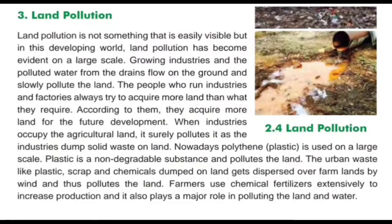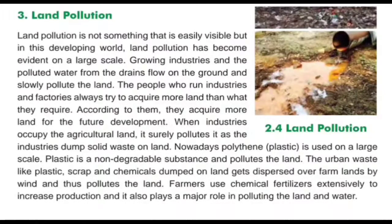When industries occupy agricultural land, it surely pollutes it as industries dump solid waste on land. Polythene, i.e. plastics, is used on a large scale. Plastic is a non-biodegradable substance and pollutes the land. Urban waste like plastic, scrap, and chemical dumps get dispersed over farmlands by wind and thus pollute the land. Farmers use chemical fertilizers extensively to increase production, which also plays a major role in polluting the land and water.